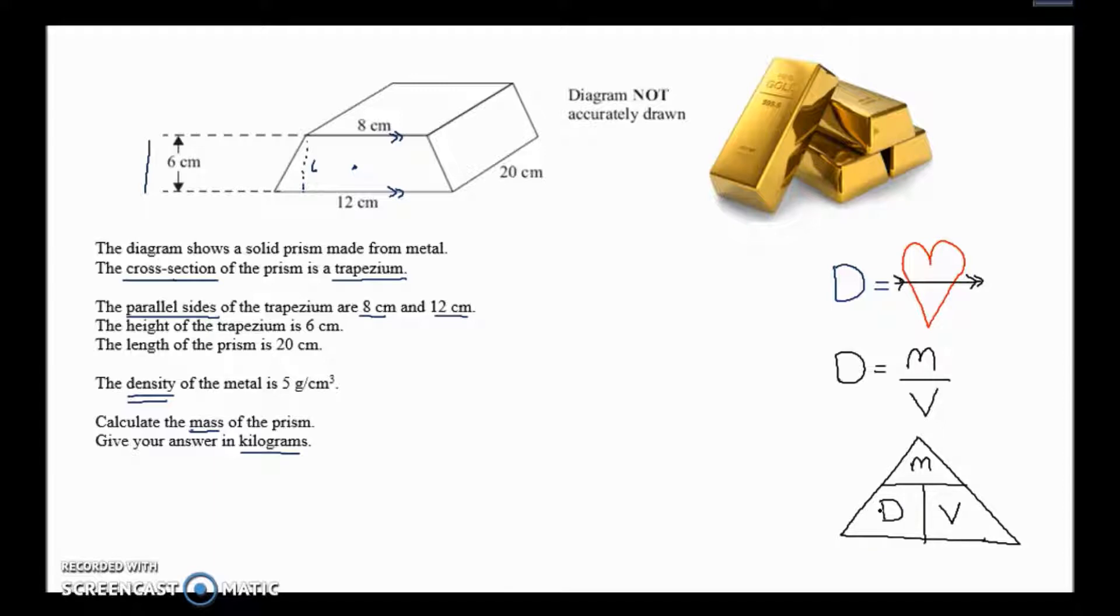That's a really useful thing because we have to use that at some point. But here's the problem: we've got the density, that's five, but I don't actually have the volume. I need the volume to work out the mass, don't I? So if I know the volume, I would know this one, and I've got the density which is five, so I'd know that one, and then I could work out the mass just by multiplying density times volume.